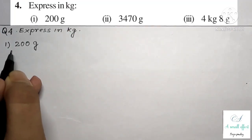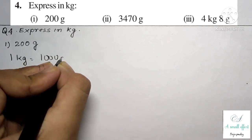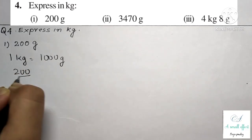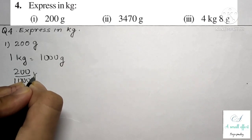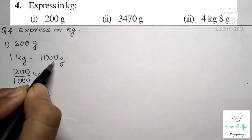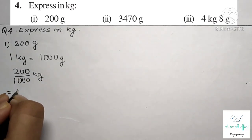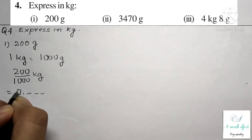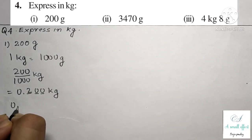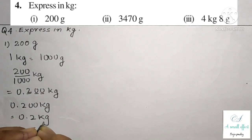Question number 4: express in kg. First part is 200 gram. We know 1 kg equals 1000 gram, so 200 gram divided by 1000. There are three zeros so the decimal point moves three places — we get 0.200 kg, which can also be written as 0.2 kg.